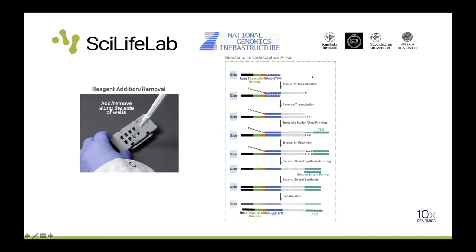The tissue permeabilization step has been established beforehand on another type of slide, because each tissue type may require a different permeabilization time. Most tissues I've worked with using the Visium protocol get a permeabilization time of 15 minutes, with some exceptions. We still need to perform this optimization on each tissue type — though not on all samples, just one representative one at least.